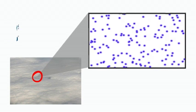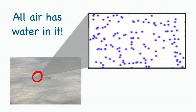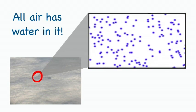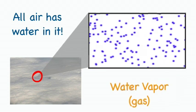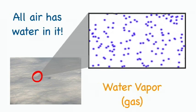All air contains water. But near the ground, it's usually in the form of an invisible gas called water vapor.